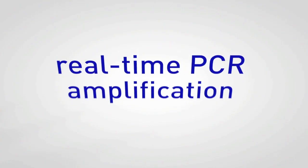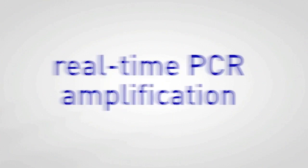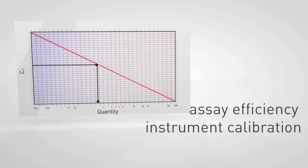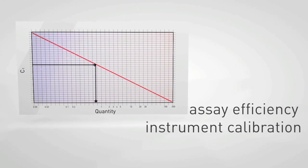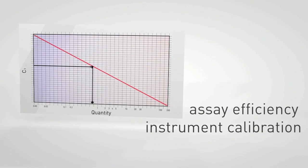Since real-time PCR amplification depends on a variety of factors including assay efficiency and instrument calibration metrics, comparison to a reference sample of known concentration is necessary to convert CT measurements for the unknown sample to an absolute concentration.